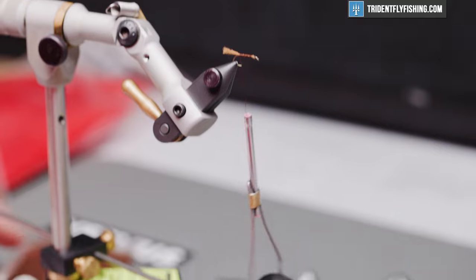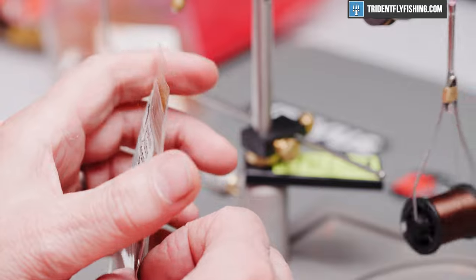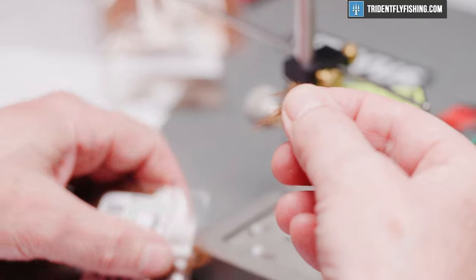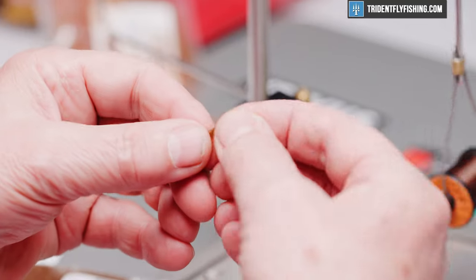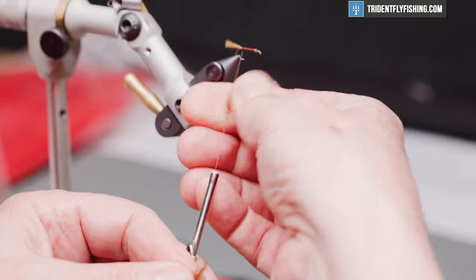The body for the fly is some hairline dubbing in chocolate brown. A lot of the caddis up on my home waters tend to be a real dark brown or sometimes tan, but mostly I see a chocolate brown color.